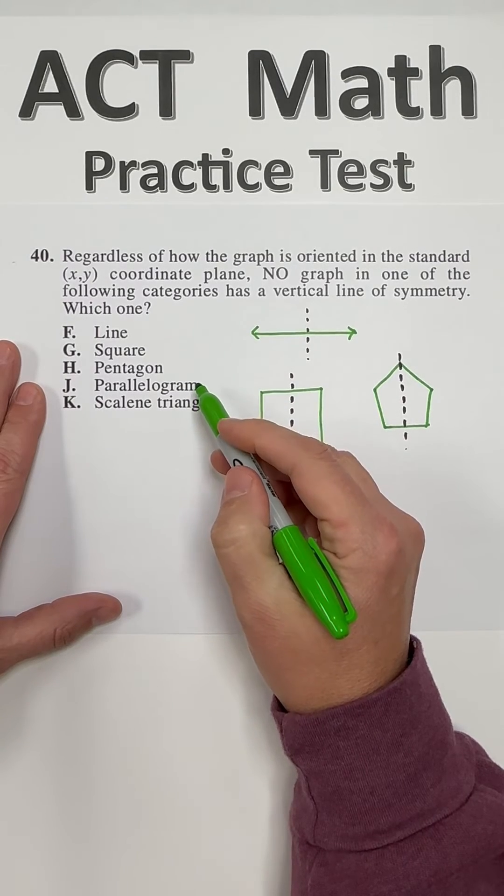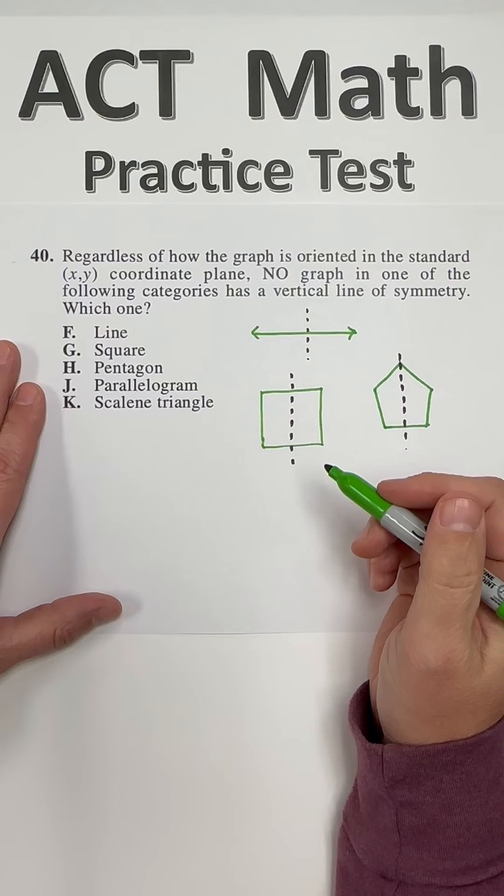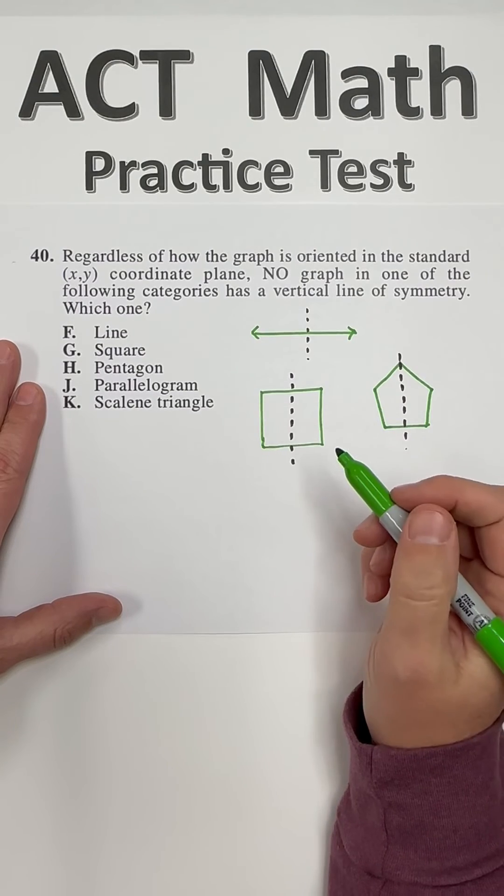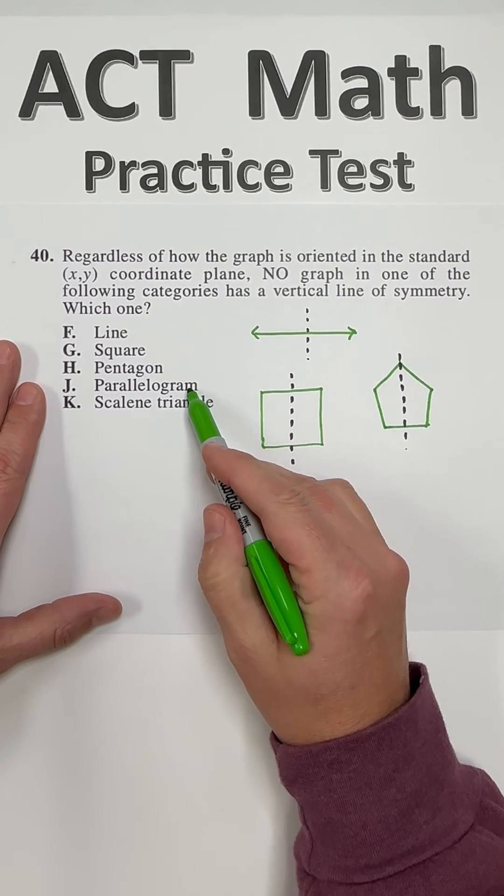Parallelogram is kind of the hard one here. You got to remember, though, that squares and rectangles are parallelograms. So that means this square example fits parallelogram too.